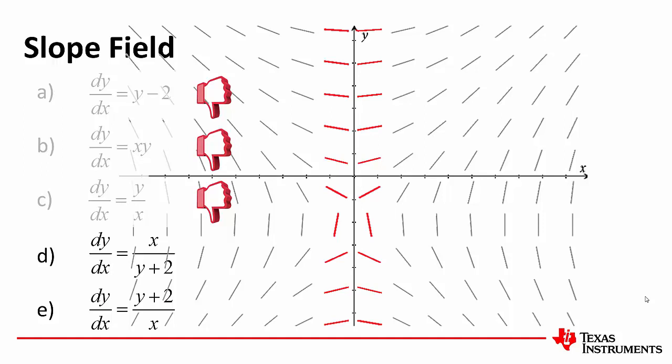Now, combining the information that we said before is that we should really be dividing by y, not dividing by x, would indicate that E is out, leaving us with option D.